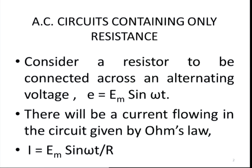First, we are going to consider AC circuits containing only resistance. We will consider a resistor connected to an alternating voltage source, E equal to Em sin omega t.